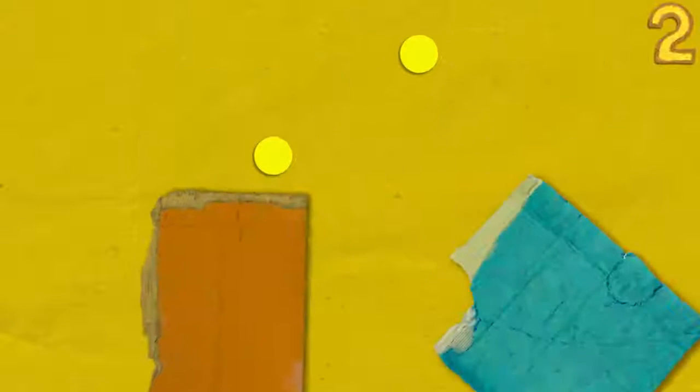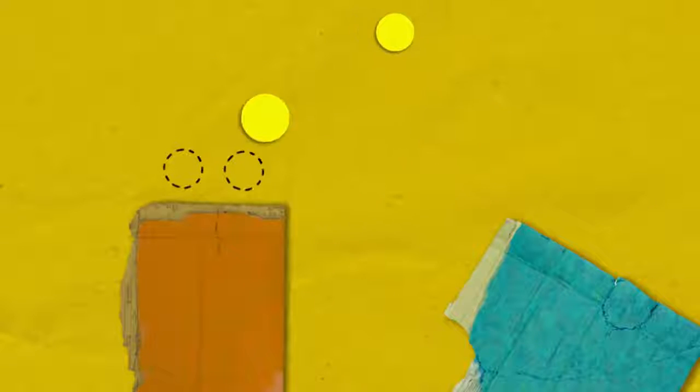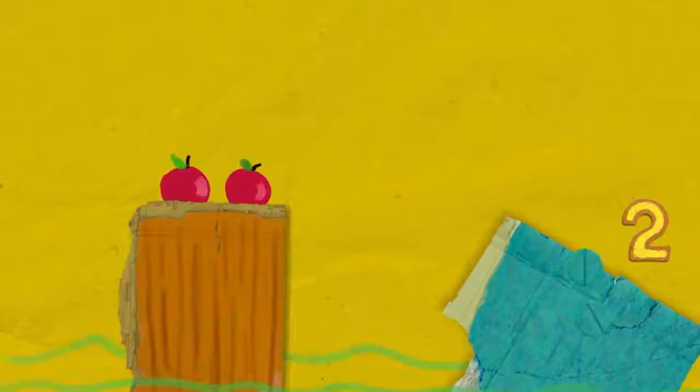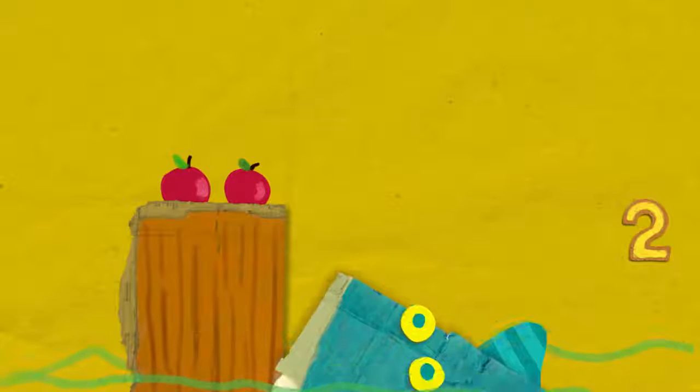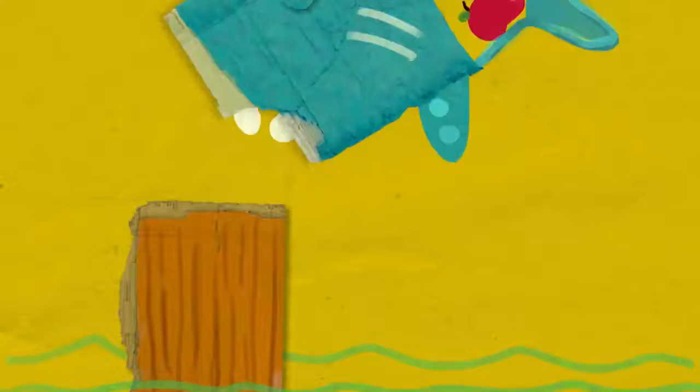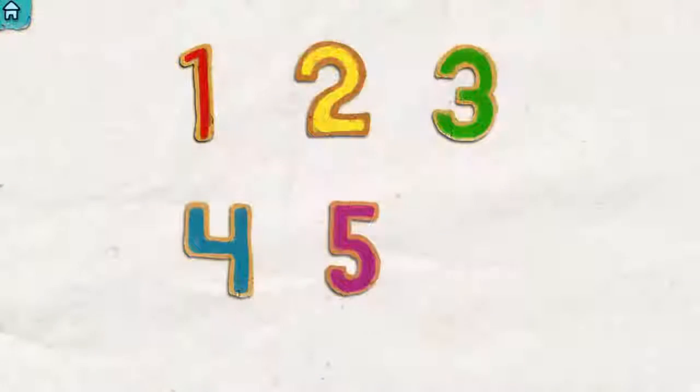One, two. One, two. Two apples. Two delicious red apples. Oh look! Two apples in the shark's tummy. Very healthy for a shark.